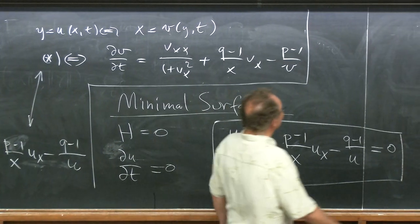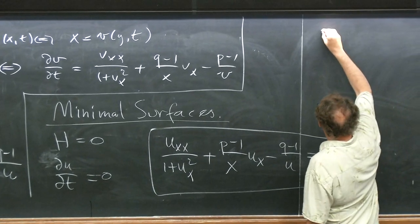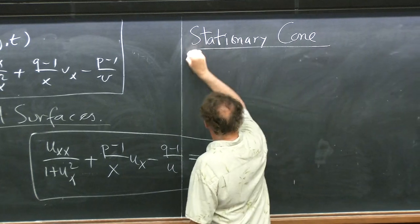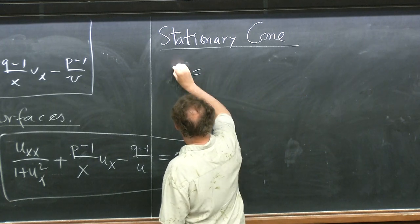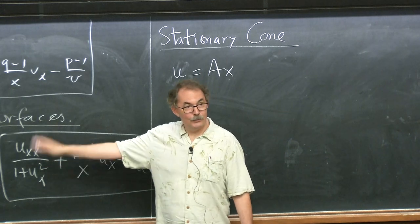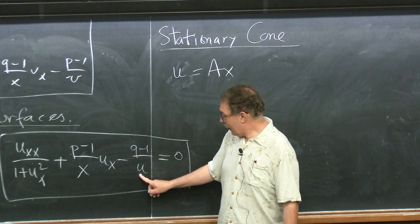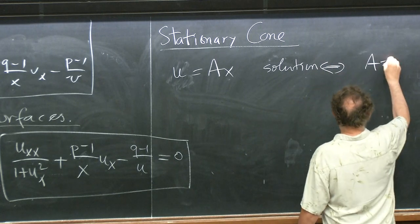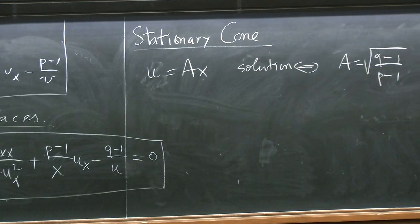One solution that is obvious in hindsight: there is the stationary cone, obtained by assuming U is a linear function. Substituting in, the second derivative is zero so the first term vanishes, and the x's cancel, giving one particular aperture A* for which this is a stationary cone.